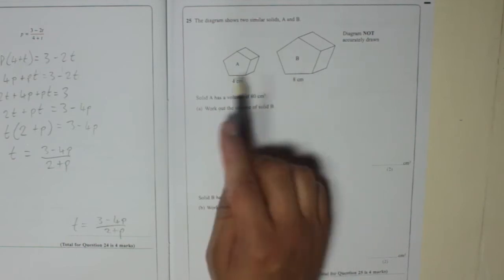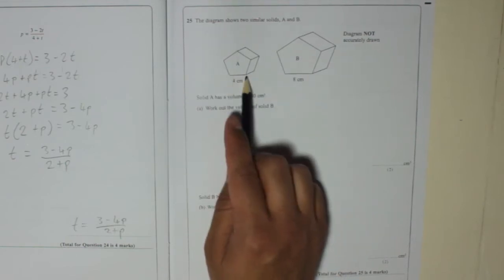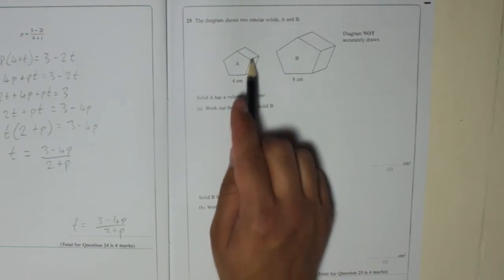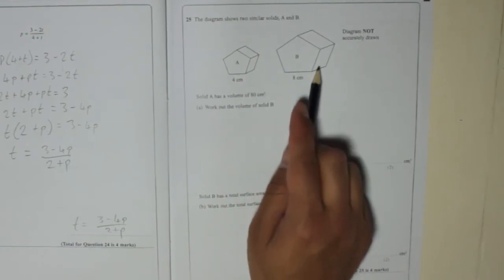All the lengths are in the same ratio. For example, that length there is 4, that length there is double it. So whatever that length there is, that one will be double it as well.